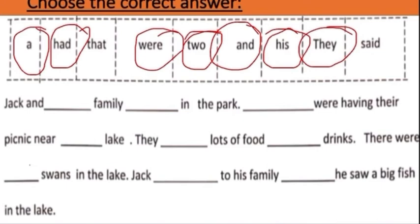And Jack said to his family that he saw a big lake. So, children, we have completed all these words in this. Have you seen? All these words are sight words which we learned just now. A, hat, that, where, to, and, his, they, said.